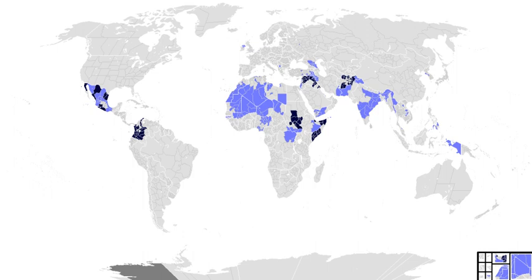Guerrilla warfare is defined as fighting by groups of irregular troops within areas occupied by the enemy. When guerrillas obey the laws and customs of war, they are entitled, if captured, to be treated as ordinary prisoners of war; however, they are often treated by their captors as unlawful combatants and executed. The tactics of guerrilla warfare stress deception and ambush, as opposed to mass confrontation, and succeed best in irregular, rugged terrain and with a sympathetic populace, whom guerrillas often seek to win over or dominate by propaganda, reform, and terrorism.